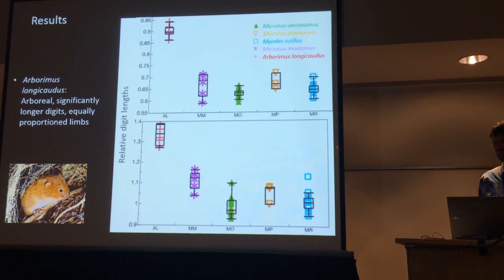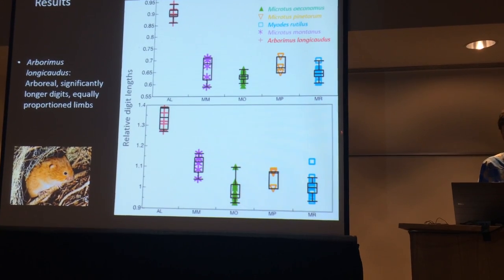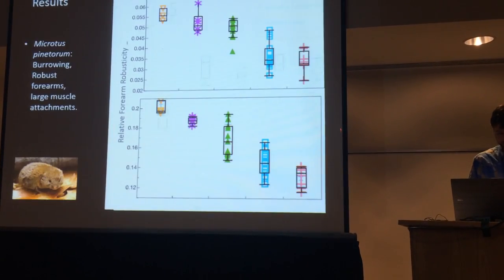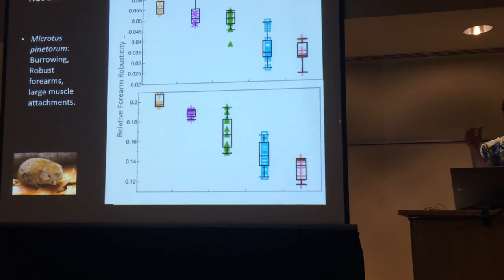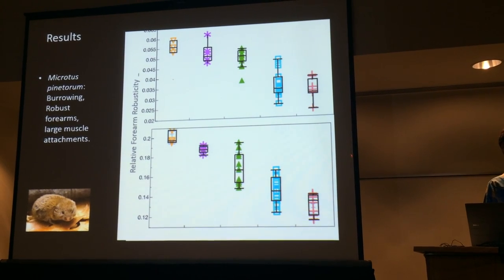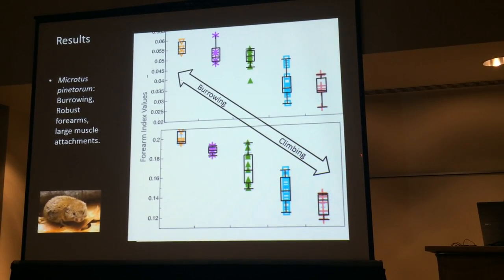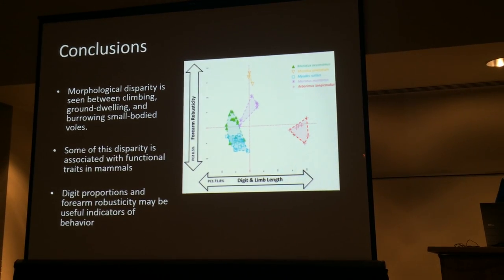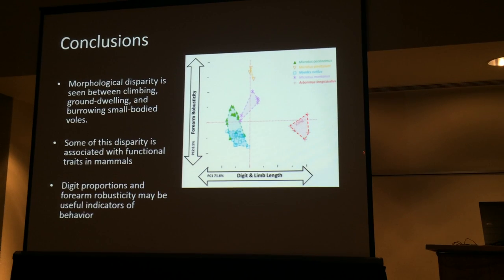This isn't something we're that surprised by — tree squirrels have longer digits than ground squirrels, for example. But taking into account that all these species are less than 60 grams, with an average weight of probably about 30 grams, we didn't necessarily expect to find this kind of variation. And with forearm robusticity, the ulna robustness and muscle attachment scores show that the fossorial species has much more robust limbs, fitting along that continuum from burrowing to climbing, with our arboreal species having much more gracile forelimbs. So we are seeing morphological disparity between these small-bodied creatures, and some of this disparity does appear to be associated with functional traits.